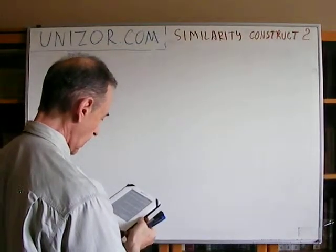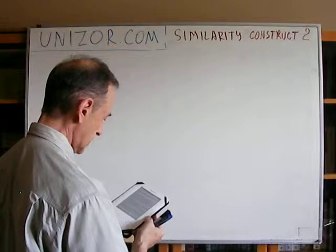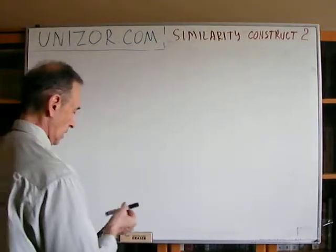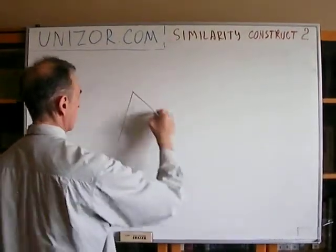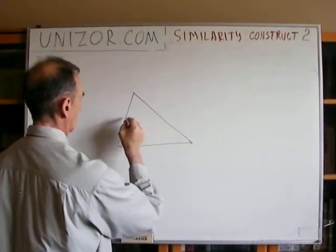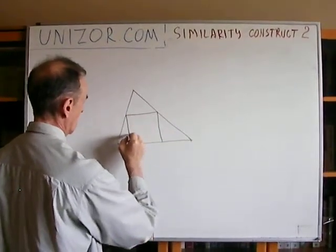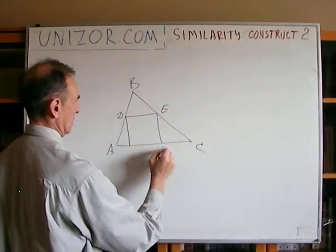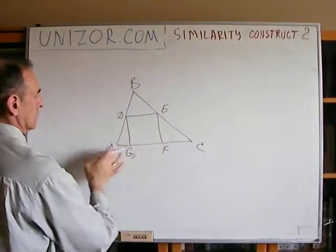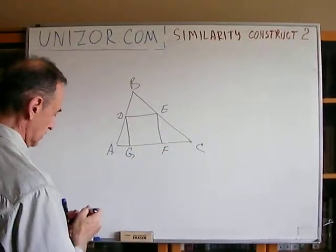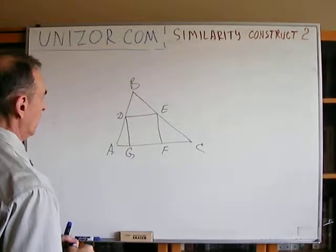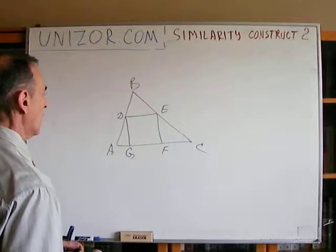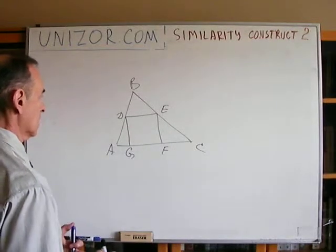Next: inscribe a square into a given triangle such that one of its sides lies on one side of the triangle and two opposite vertices lie on the two other sides. This is a similar problem. Using similarity, draw a line parallel to AC and build any square on it.